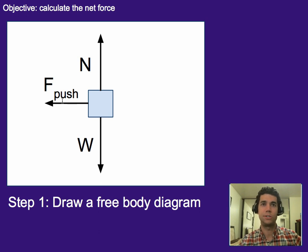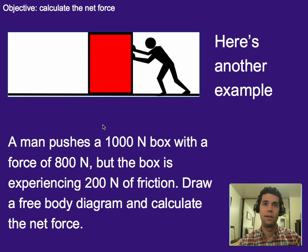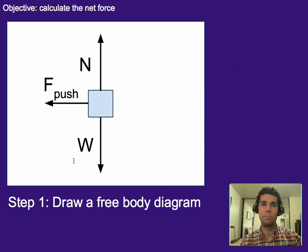And last but not least we have a push going to left. Notice that this push is smaller than these two because if we go back to our previous problem the weight is greater than the force of the push. So it's important again that you keep the arrows approximately proportional.